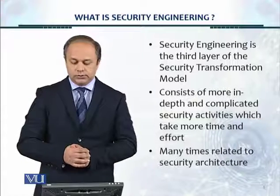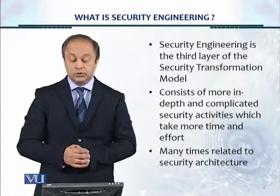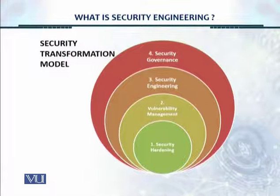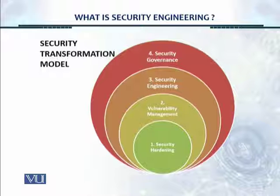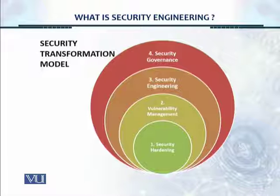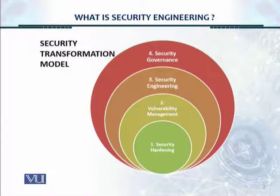Security engineering is often related to security architecture. Here is another look at the four-layer security transformation model. Security hardening is layer one, vulnerability management or vulnerability scanning is layer two, and now we're talking about security engineering — looking at the IT environment, IT administrators, and IT users in an aggregate, collective manner, applying controls across all IT assets in the form of the CIS critical controls or the Top 20 Critical Controls.